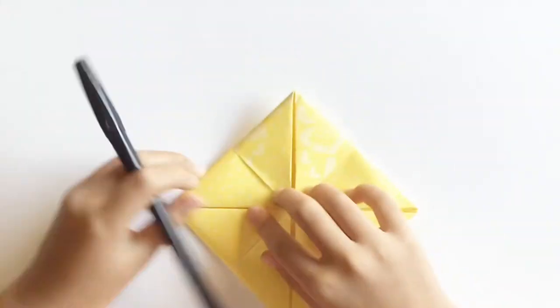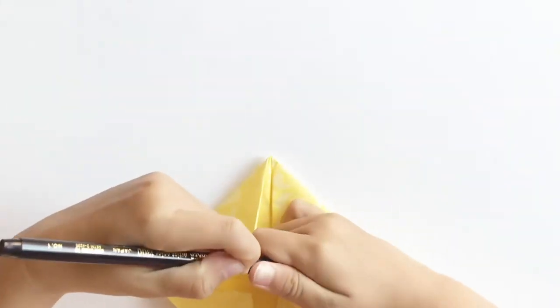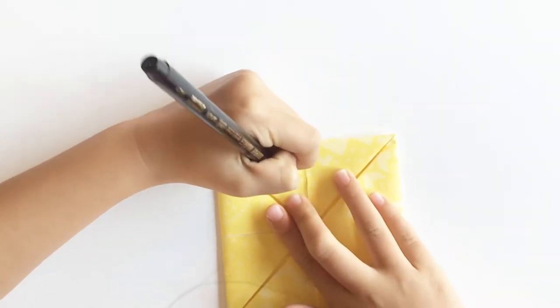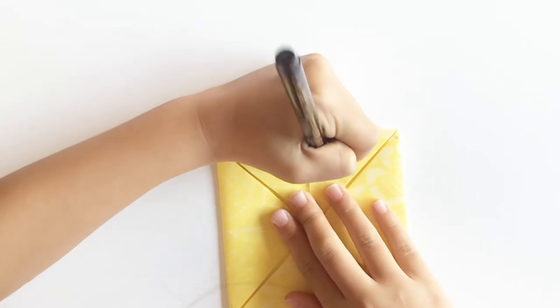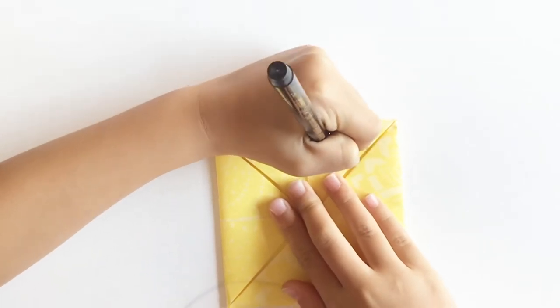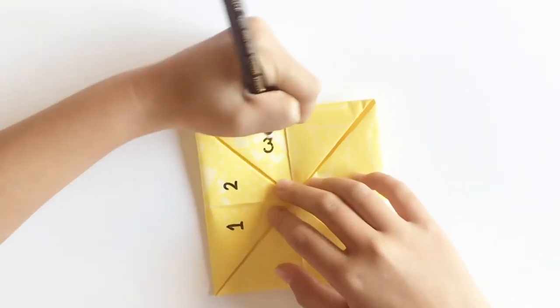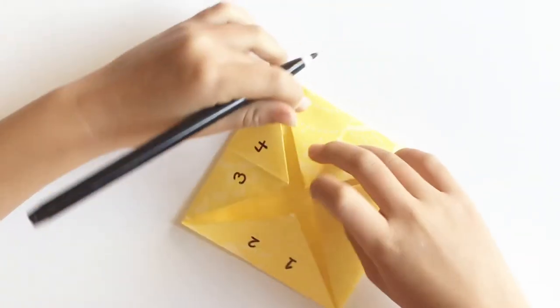Now flatten all the edges and get ready to write the numbers. First, put the one on the top left corner and then on the top right, put two. Then turn the origami paper and put three and four right next to each other. They are friends.